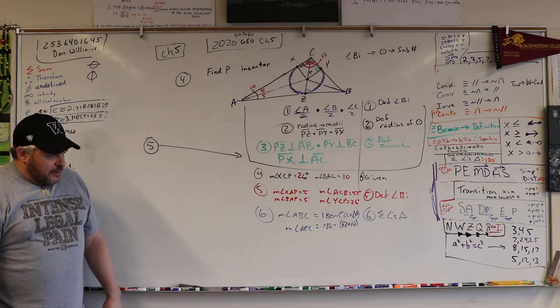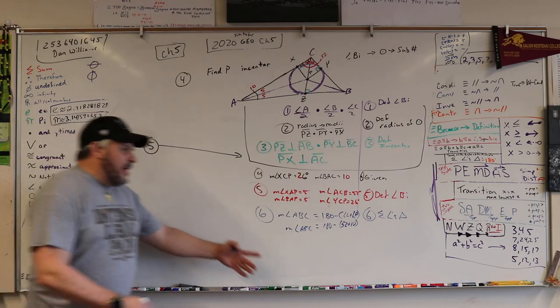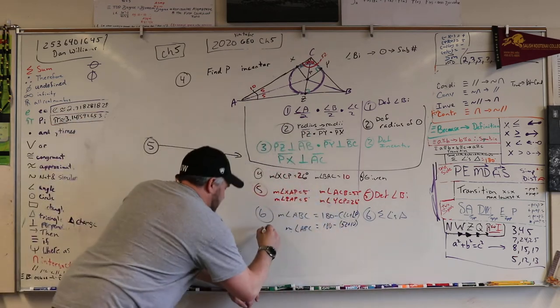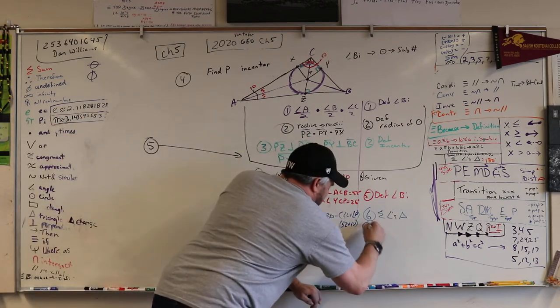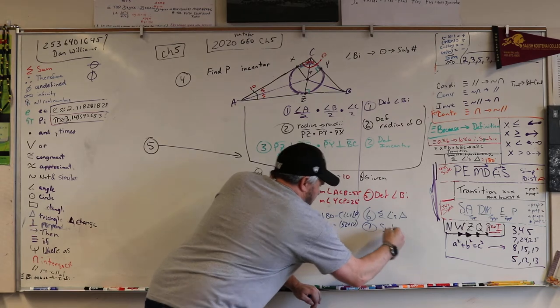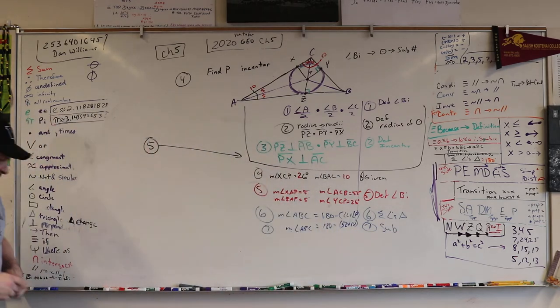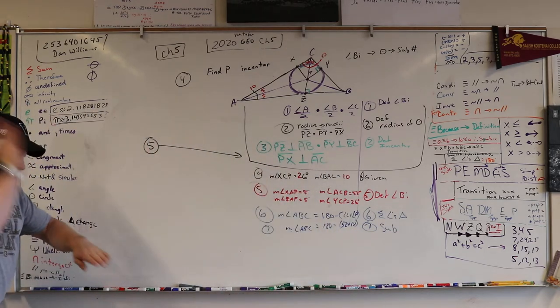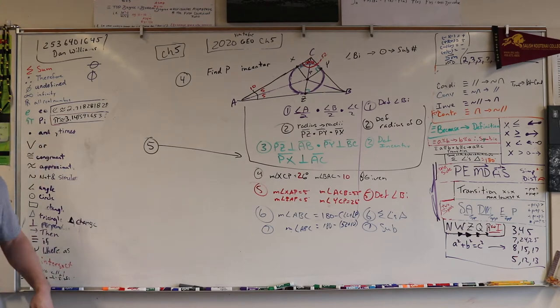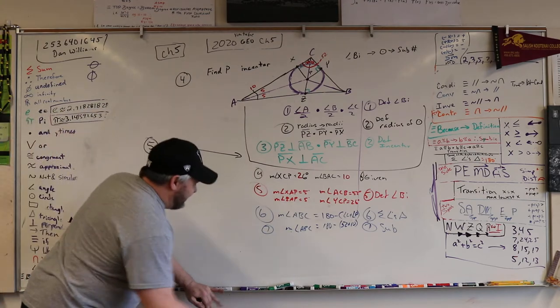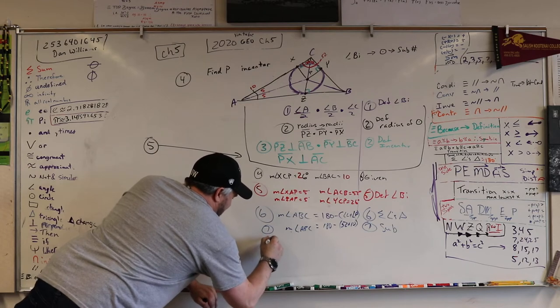All right. So what is 52 plus 10? Oh, by the way, what did we do here? This is step seven. Step seven is substitution. Sorry I didn't change the color. Bad damn. So what's next? Simplify. Good.